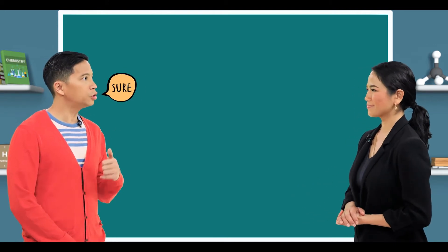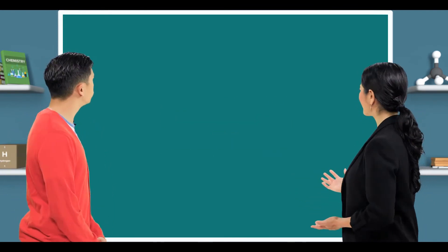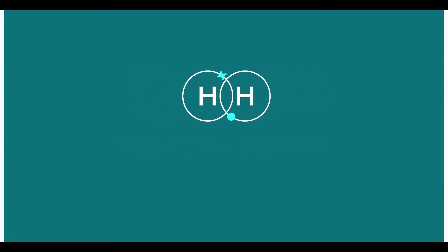Let's do a review and then dive deeper into covalent bonding. Sure. Let's take hydrogen gas H2 for example. Each hydrogen atom has one electron, and they share it with another hydrogen atom to form a hydrogen gas molecule with a stable duet configuration. The two hydrogen atoms are joined by a single bond, or a shared pair of electrons. Now let's draw the dot and cross diagram of the formation of hydrogen gas. It should look like this.